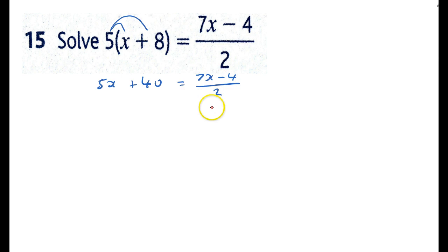We don't like that divide by 2 so we're going to vaporize it by multiplying both sides by 2, and times everything by 2 here so that'll be 10x plus 80 equals 7x minus 4. Vaporize the bottom bit.